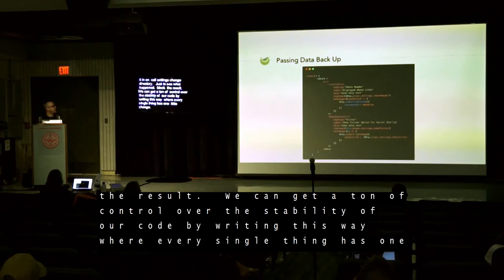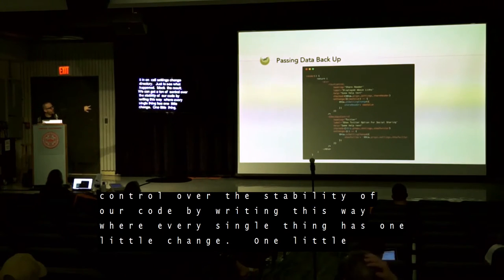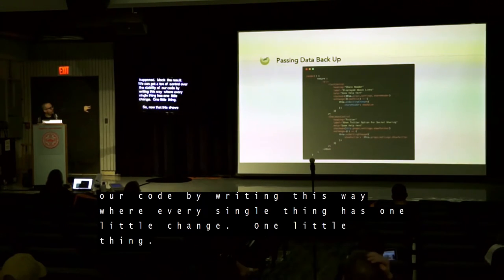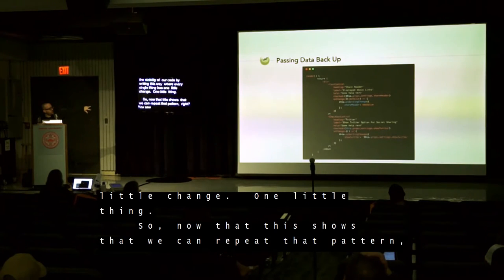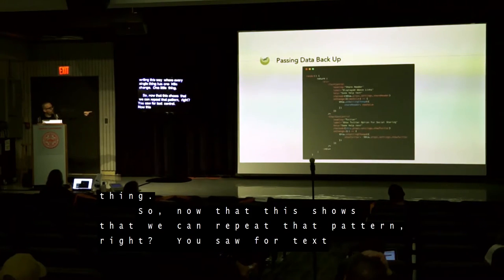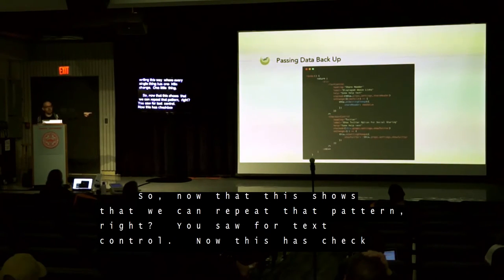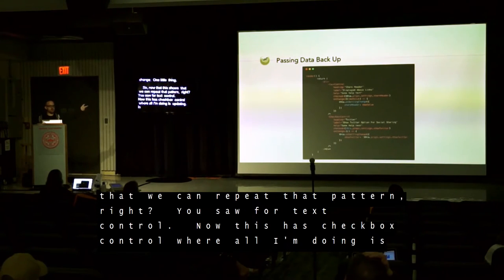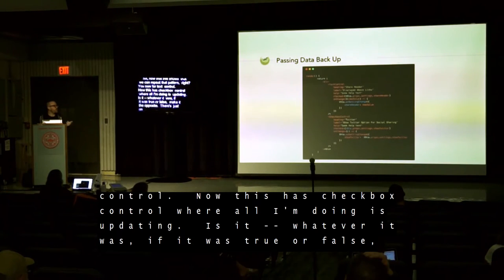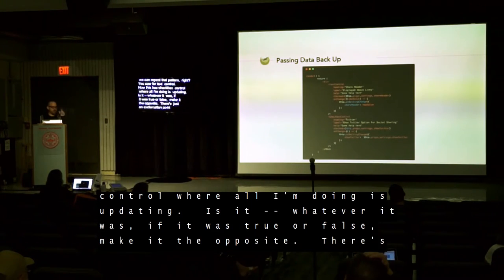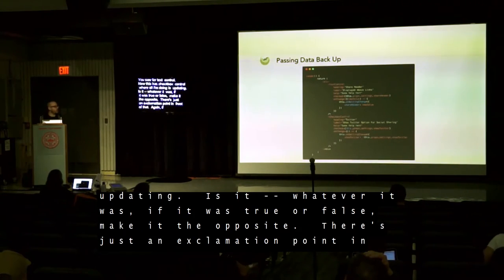Now that this shows we can repeat this pattern — you saw it for TextControl — now there's CheckboxControl, where all we're doing is updating: whatever the value was, if it was true or false, make it the opposite. There's just an exclamation point in front of the same value. If you have my slides you'll be able to click through to get the code.